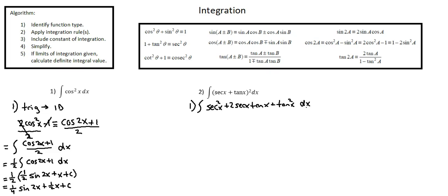Now I see three terms, two of which I'll be able to integrate directly — the first two terms. It's tan²x that tells me I need to use an identity to replace it with something I can integrate. Looking at the identities table, I see 1 + tan²x is an identity with sec²x. I'll manipulate the identity so that tan²x is on the left side by subtracting 1: tan²x = sec²x − 1. Now in our integral we can replace tan²x with sec²x − 1.